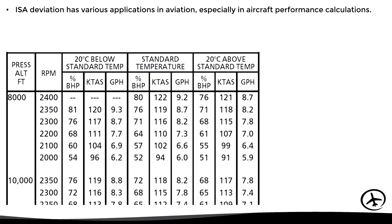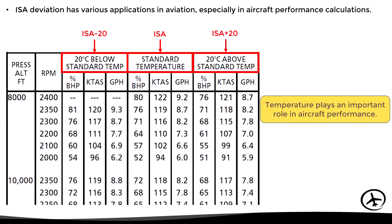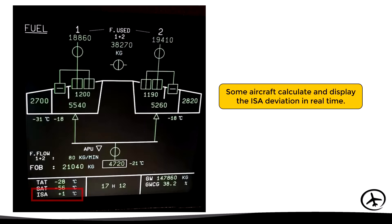Let's see an example of how this information can be used. Here we have a typical cruise performance table for a light aircraft. It takes into account different conditions and parameters in order to show the expected aircraft performance, and one of these is the air temperature. As we can see in the upper row, the temperature is expressed in terms of ISA deviation. The middle column corresponds to ISA conditions and should be used only when the ISA deviation is zero. In the left column we can see ISA minus 20 and in the right side ISA plus 20. In order to properly use the table, the pilot must first determine the ISA deviation and then use the corresponding column. In some aircraft it is not necessary for the pilot to manually calculate the ISA deviation, since these aircraft have systems that automatically calculate the deviation in real time.